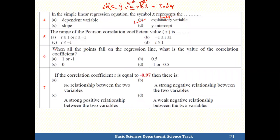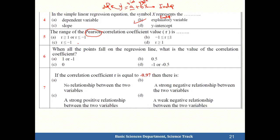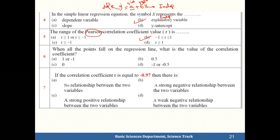Question 5: the range of the Pearson correlation coefficient. The correlation coefficient r ranges from negative 1 to 1, between negative 1 and 1.